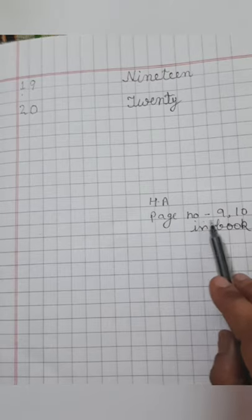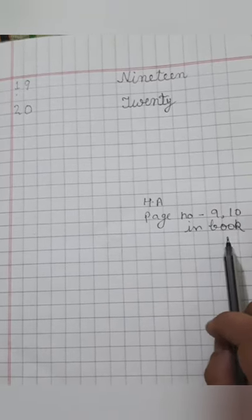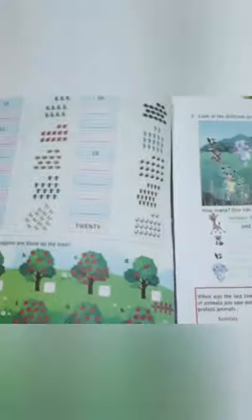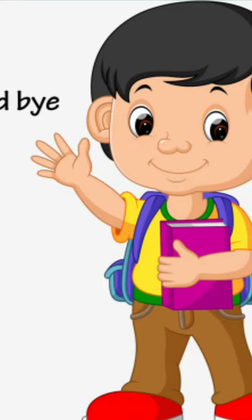Students, you will do page number 9 and 10 in your book. This is your homework. This is your page number 9, number name. Like this, you will write 1, then 2, 3, 4. And page number 10, this is your page number 10. You will fill this work in your book. Now we will meet in next class. Bye, see you next week.